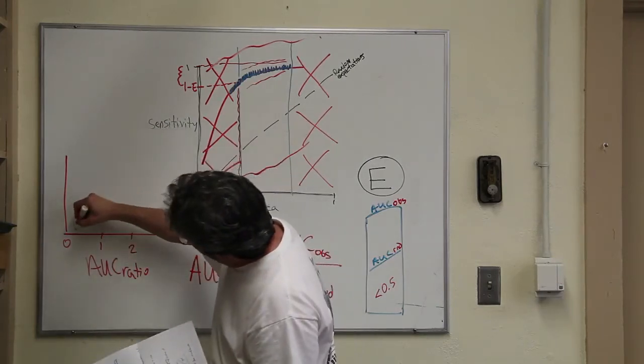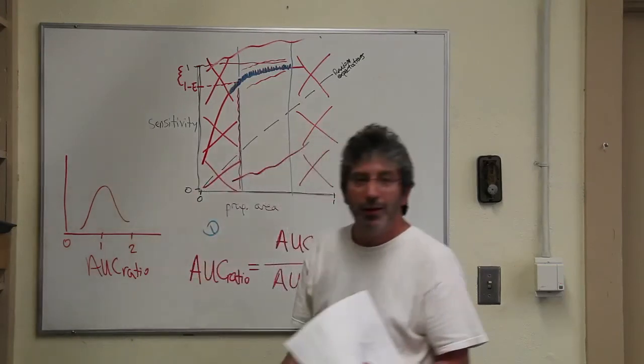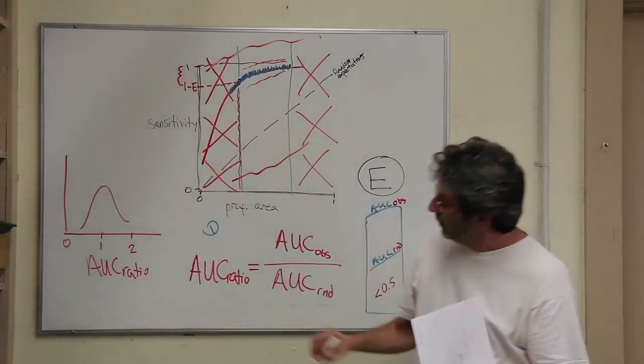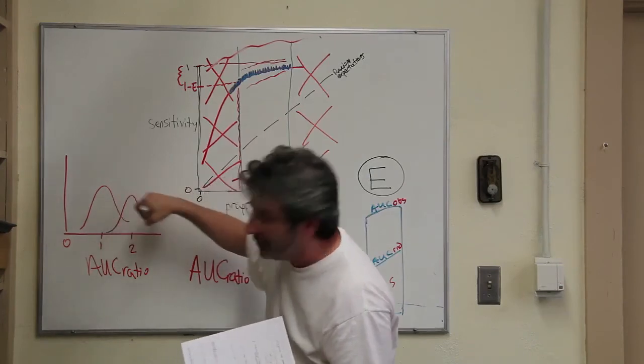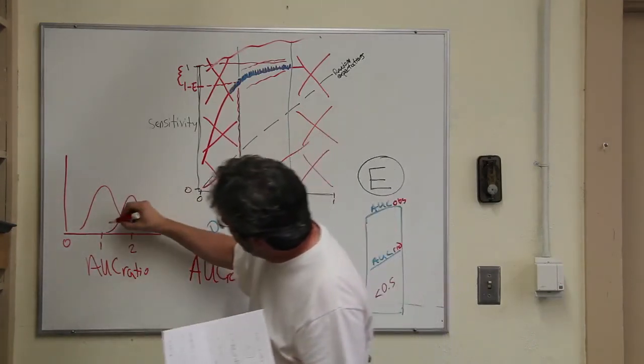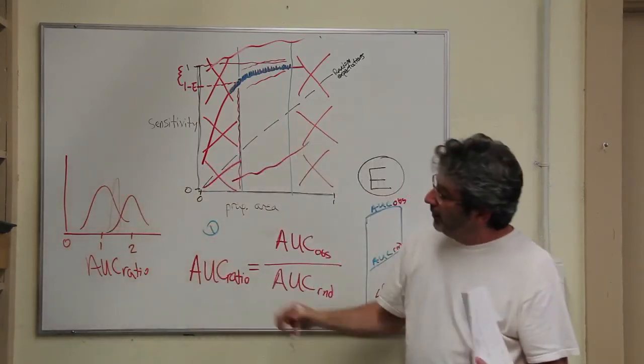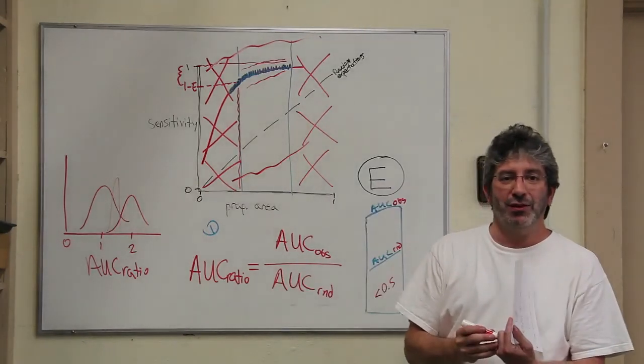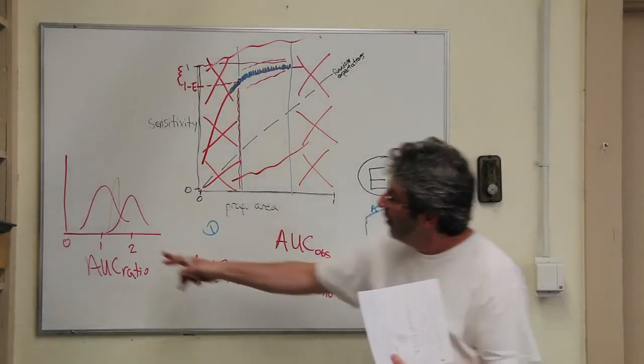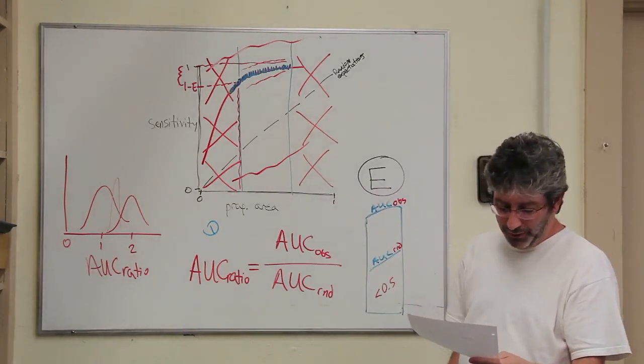And a bad model, essentially a model that's not doing much better than random, might look like that. Whereas a good model will be somewhere elevated above 1. It might be like that, might be like that, but notice that 1, which is the random expectation, is not included broadly within that probability distribution.